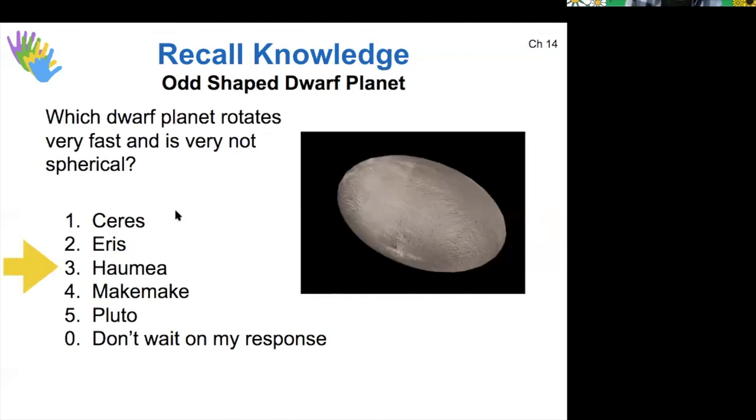So Ceres and Eris, Haumea, Makemake, and Pluto. Those are all dwarf planets. Remember Ceres and Eris are in the asteroid belts. The rest of these are in the Kuiper belt. All right. So that's just an example of rotational flattening.